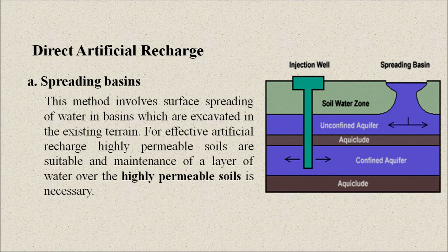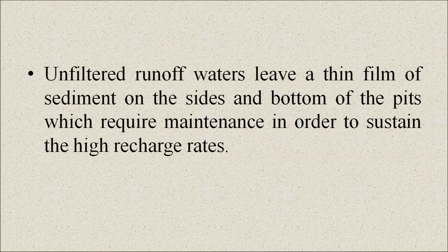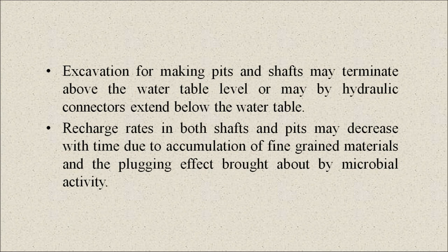Now, direct artificial recharge methods. The first is spreading basins. This method involves surface spreading of water in basins excavated in the existing terrain. For effective artificial recharge, highly permeable soils are suitable, and maintaining a layer of water over the highly permeable soils is necessary. Next are recharge pits and shafts. Often, areas of low permeability lie between the land surface and the water table. In such situations, artificial recharge systems such as pits and shafts can be effective. Unfiltered runoff water leaves a thin film of sediment on the sides and bottom of the pits, requiring maintenance to sustain high recharge rates. Excavation for pits and shafts may terminate above the water table or may be hydraulically connected to extend below the water table.